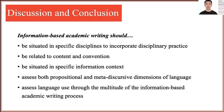Based on the findings of this study, I argue that information-based academic writing should be situated in specific disciplines to incorporate disciplinary practice, be related to content and convention, be situated in specific information contexts, assess both propositional and metadiscursive dimensions of language, and assess language use through the multitude of the information-based academic writing process.